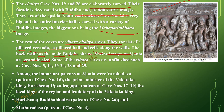Some of the vihara caves are unfinished — for example, caves 5, 14, 23, 28, and 29 are all unfinished vihara caves. The important patrons at Ajanta were Varahadeva and Upendra Gupta. Varahadeva patroned Cave number 16; he was also the prime minister of king Vakataka king Harishena. Upendra Gupta was a local king and a feudatory of the Vakataka king Harishena. Buddha Bhadra patroned Cave number 26, and Madhurdhasa patroned Cave number 4.